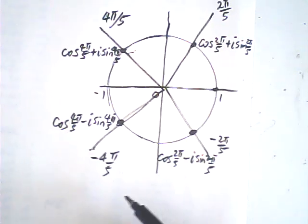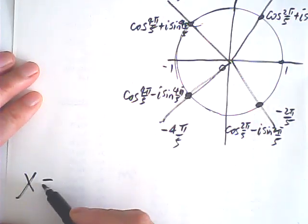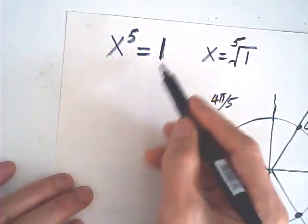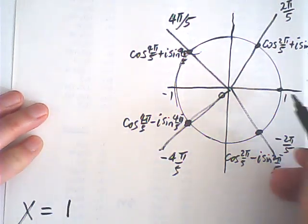So therefore, all together, we have 5 roots. So x is equal to 1, that's one of them.